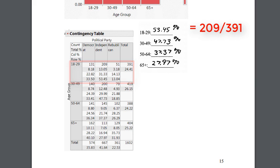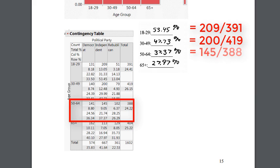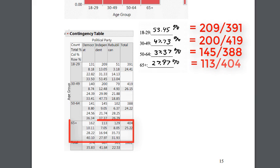As you notice, it will get smaller and smaller. 200 out of 419, 145 out of 388, and 113 out of 404. This follows the pattern we were looking at and also meets our condition. Given somebody is 18 to 29, what is the probability that they are independent? So of all the 18 to 29 year olds, what percent of them are independent?